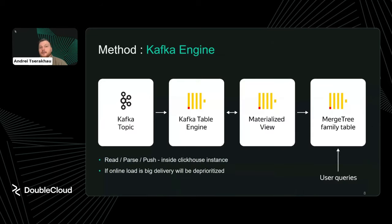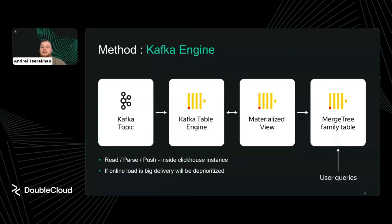Let's look closely at the Kafka Engine method. It's basically a chain of tables inside ClickHouse. You create a Kafka table engine — a special table that connects to Kafka — then a materialized view to pull data from that Kafka table engine, and then a MergeTree-family table where data finally lands in ClickHouse. Those three tables represent the read, parse, and push stages specified as ClickHouse table objects.